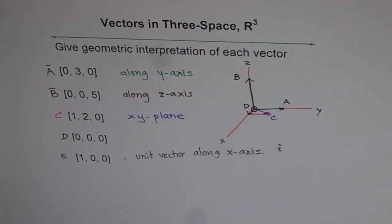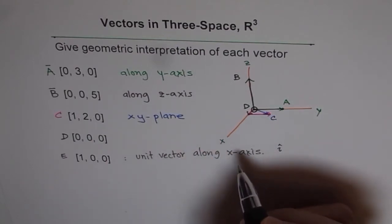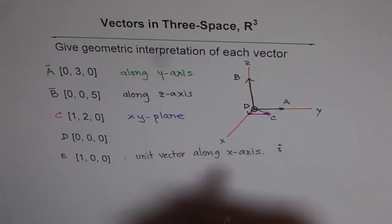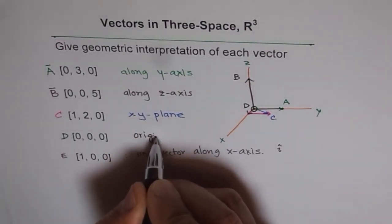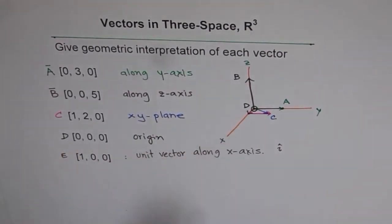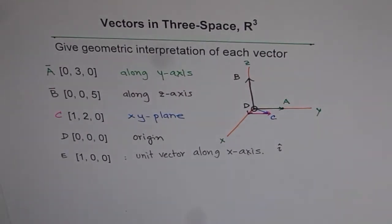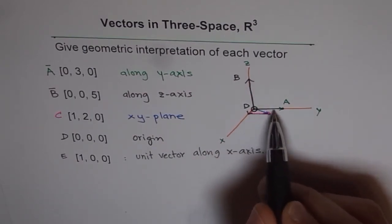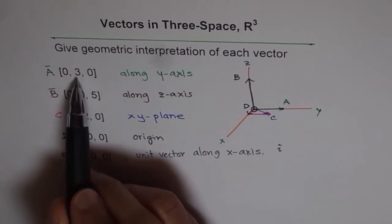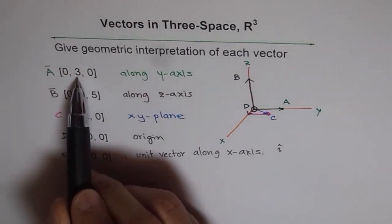We found that these examples tell us geometric placement of a vector, and D was the point origin, so the vector is a zero vector right there at the origin. This gives you an idea that if we have a vector along the y-axis, then in that case only values in the direction number of y will change.